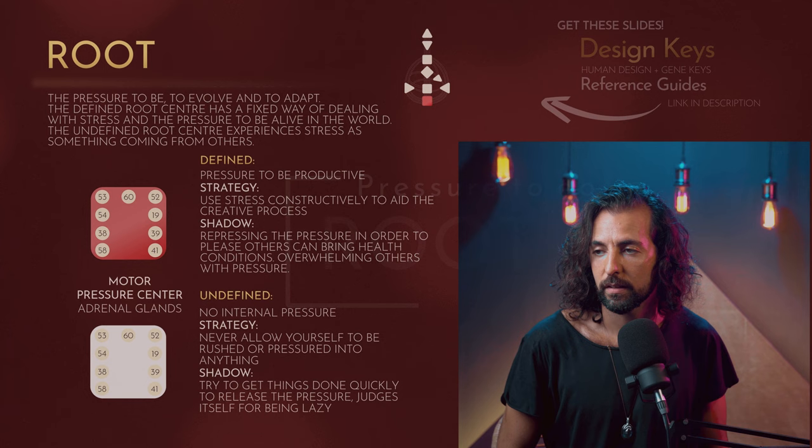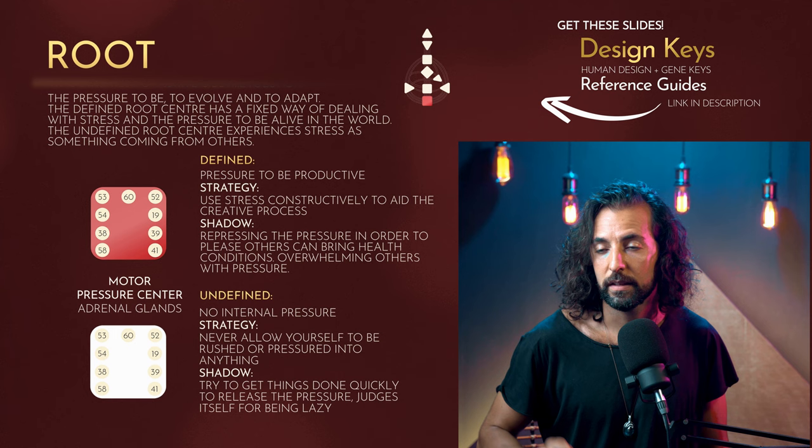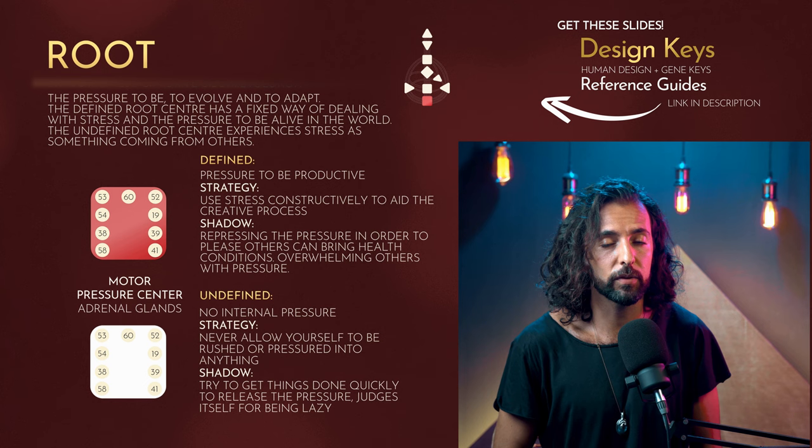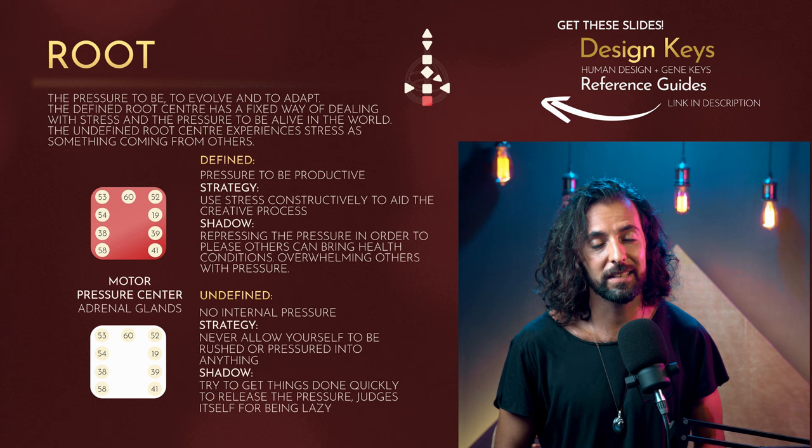We're going to start at the base with the root center. We've used keywords from Gene Keys along with knowledge from human design. The root center is a motor — a center that gives you drive and energy to act. In the case of the root center, it's also a pressure center: it gives you the pressure and drive to do things, to grow, to evolve, to adapt.